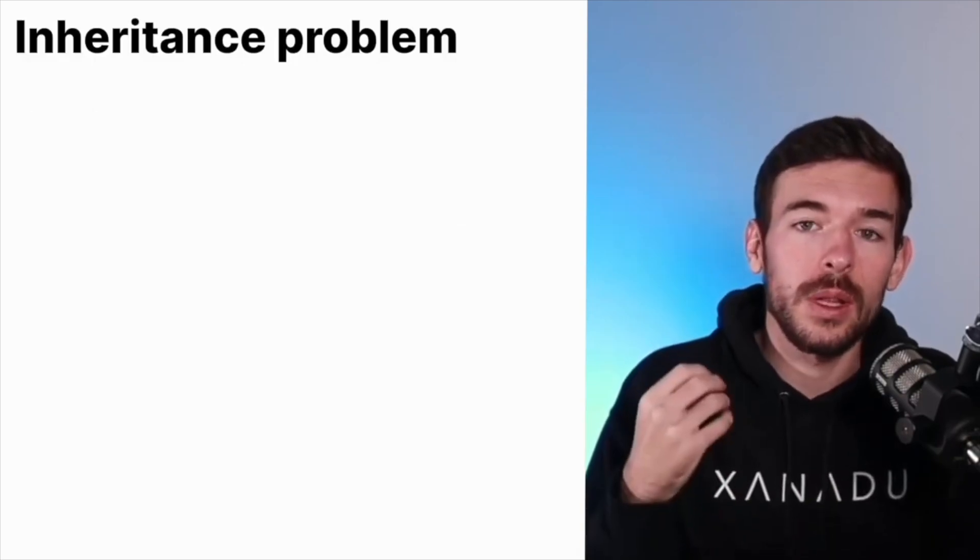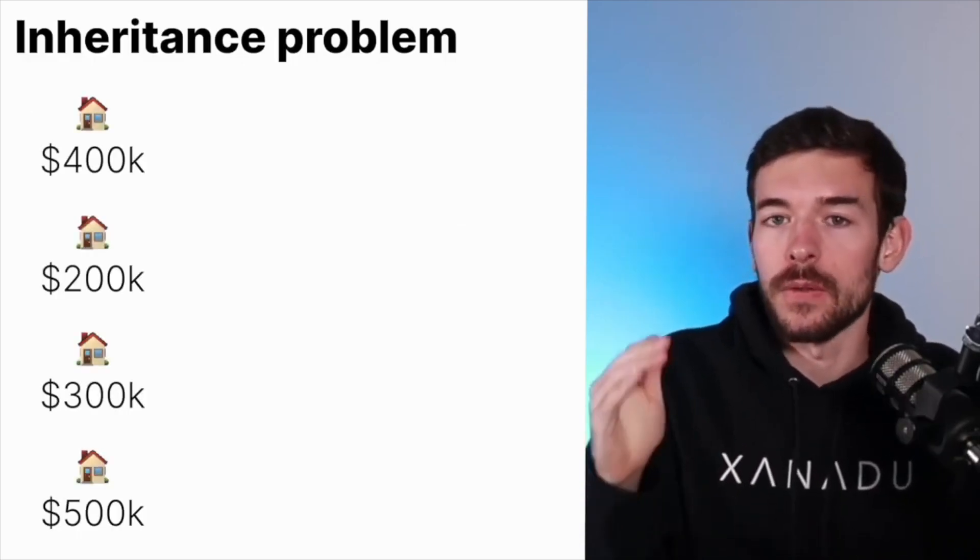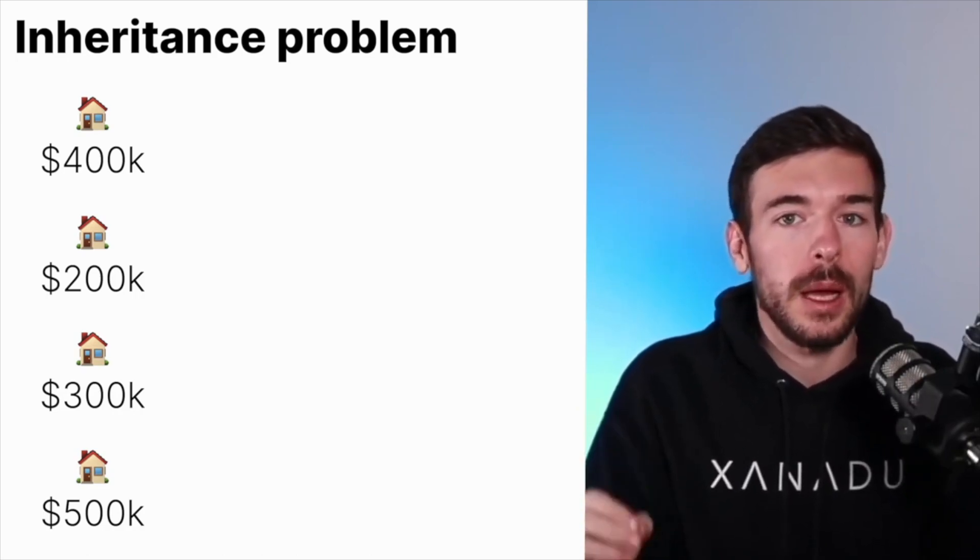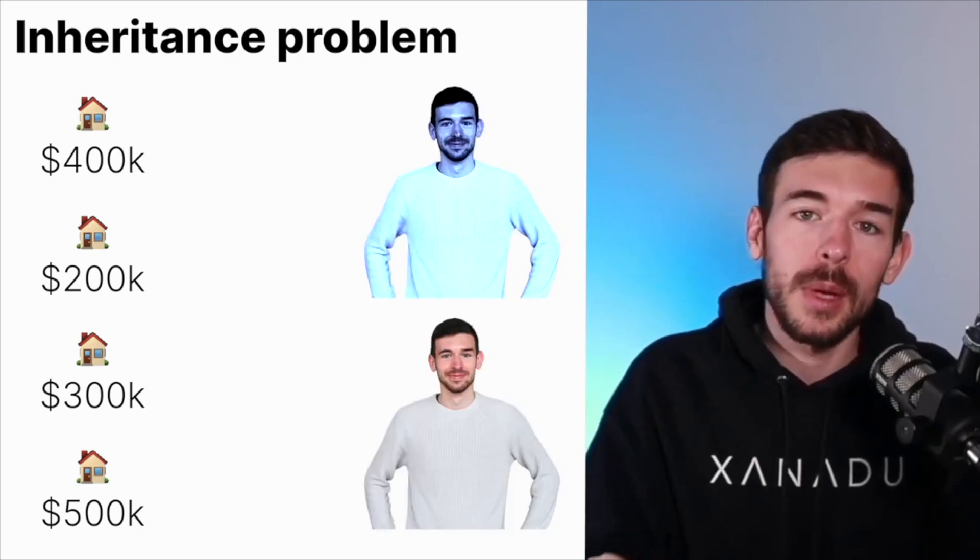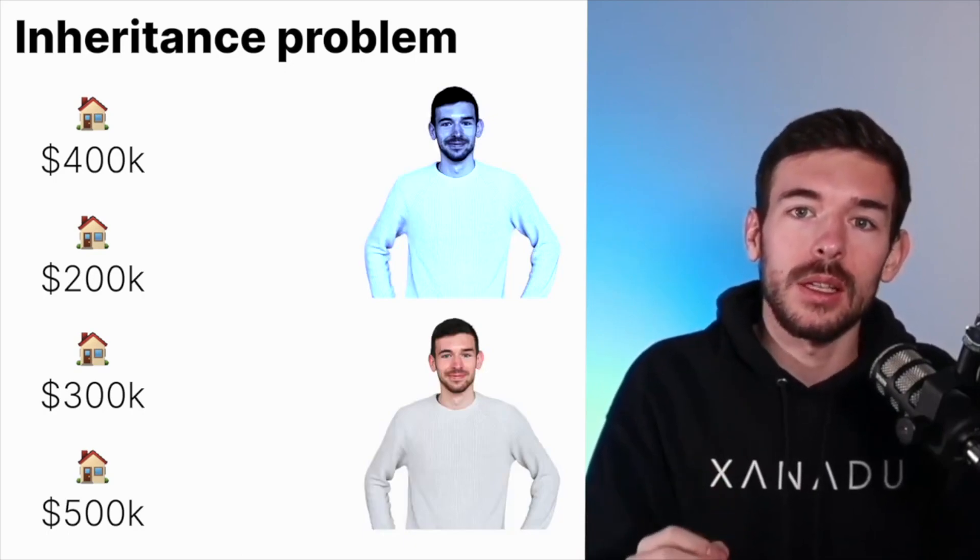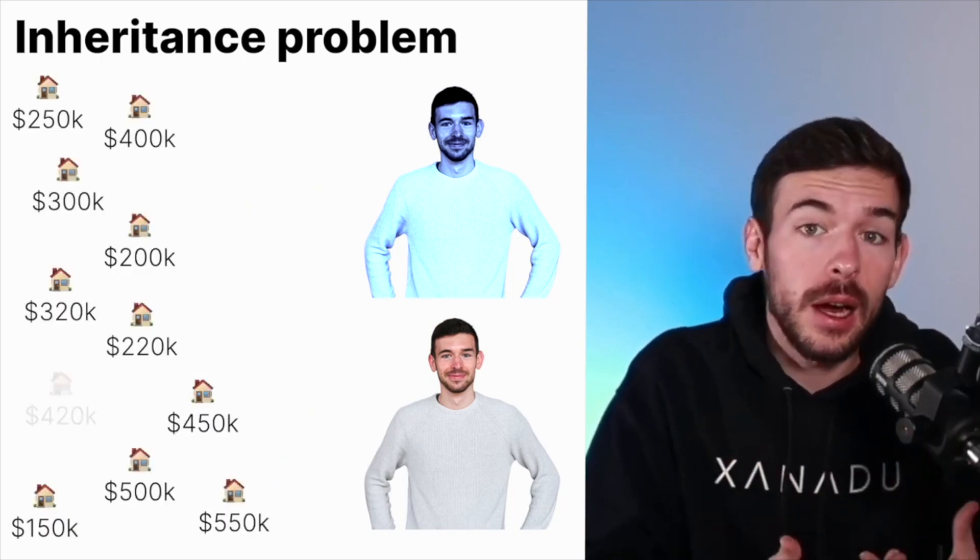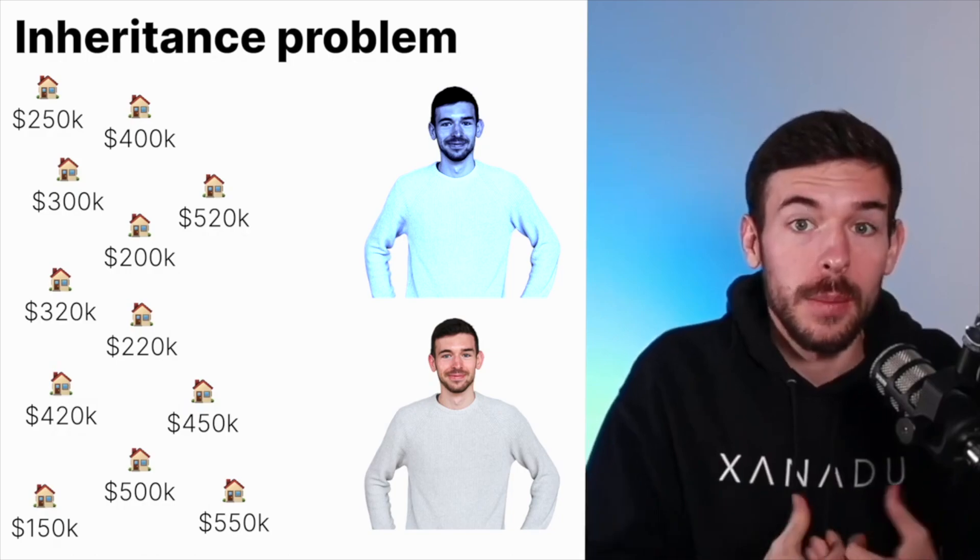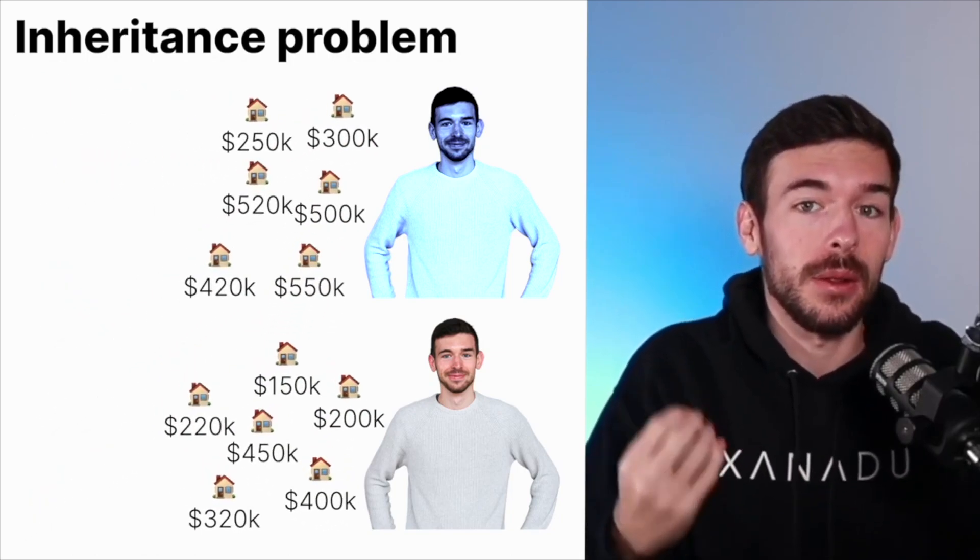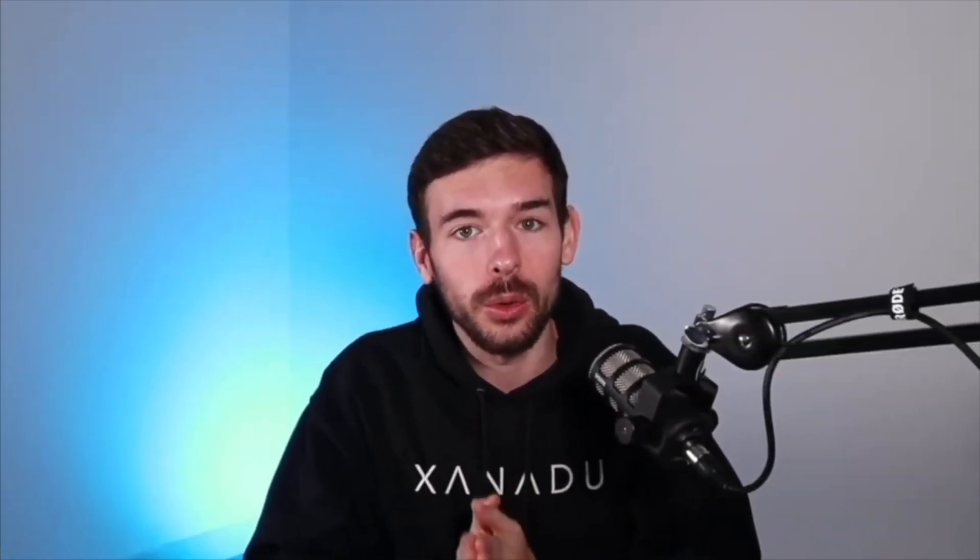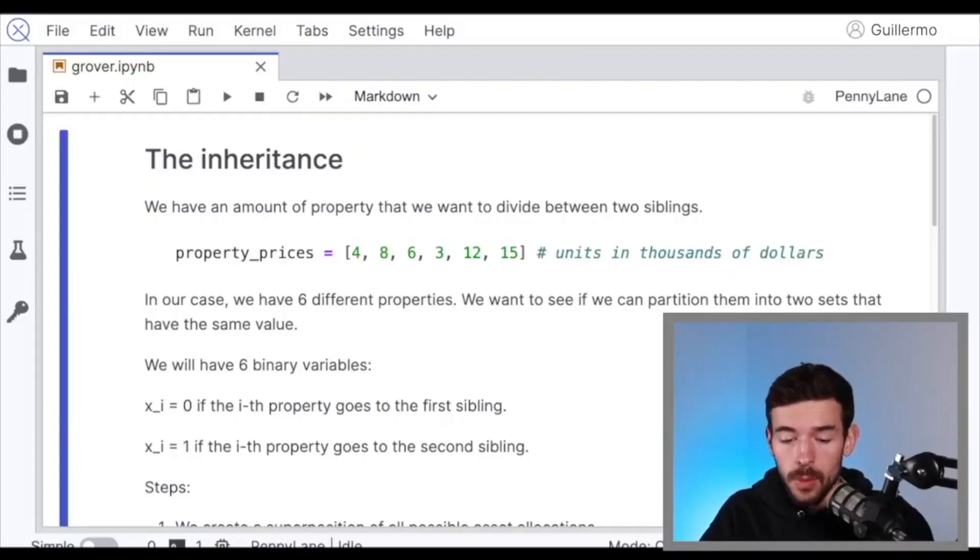Let's work with the inheritance problem. Let's say we have a set of different properties, each one with a different value, that we want to divide between two siblings, but we only want to find a combination that is a completely fair distribution. In this scenario, it's hard to create a solution, but actually it's super easy to check if something is correct or not. So we have all the ingredients to start to code the whole idea. Let's go to the notebook.